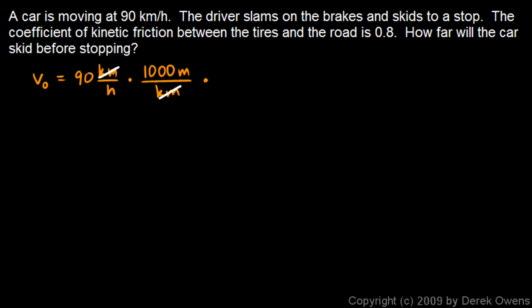Times 1 hour per 3,600 seconds, and the hours cancel out, and I'm left with meters per second. And so I pull out the calculator, 90 times 1,000 divided by 3,600 comes out to 25. So that's the initial velocity.